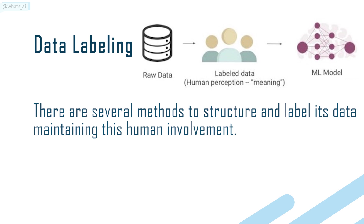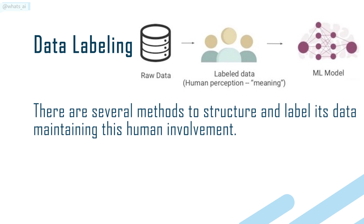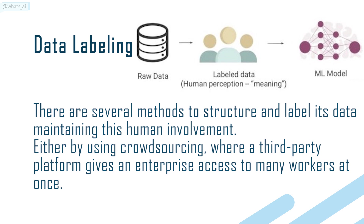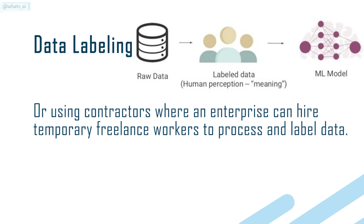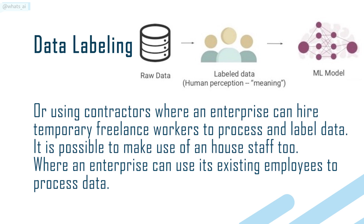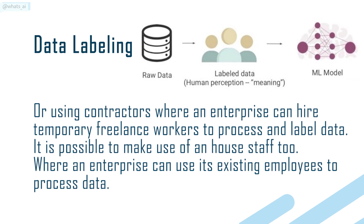There are several methods to structure and label data while maintaining human involvement: crowdsourcing, where a third-party platform gives an enterprise access to many workers at once; using contractors, where an enterprise can hire temporary freelance workers to process and label data; or using in-house staff, where an enterprise uses its existing employees to process data.